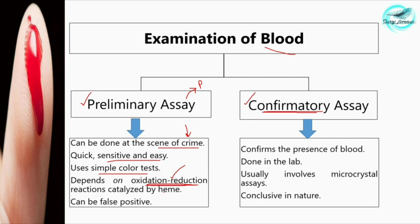It is important to keep your concepts clear so you can understand everything clearly. The oxidation-reduction reactions used in presumptive tests are catalyzed by the heme molecule. However, a disadvantage is that these tests can give false positive results due to various factors, which will be discussed in the next video when we cover the actual preliminary examinations carried out on blood.